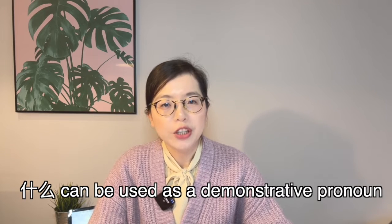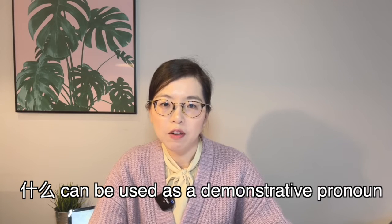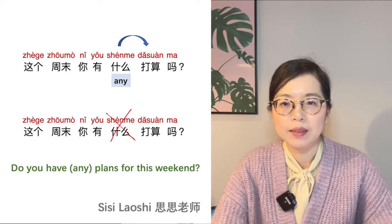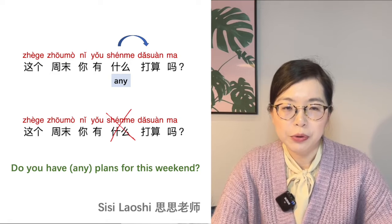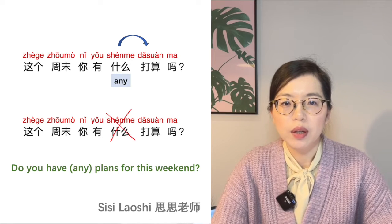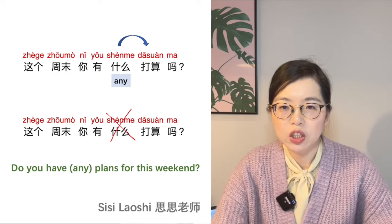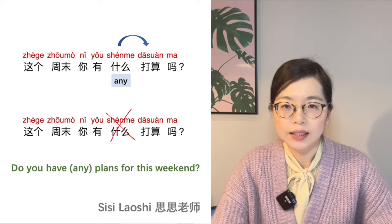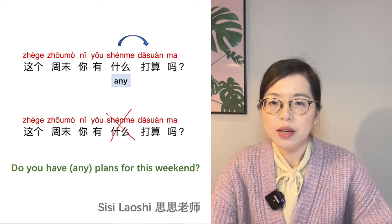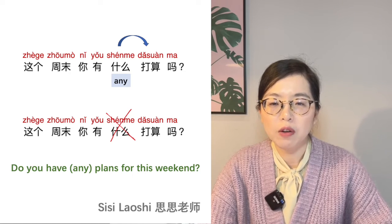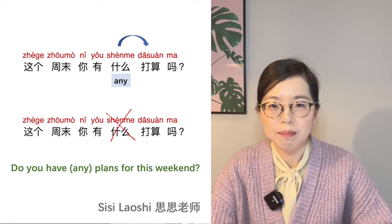In Chinese, 什么 can be used as a demonstrative pronoun instead of an indefinite person or thing, making the tone polite. 这个周末，你有什么打算吗？ In this sentence, the demonstrative pronoun 什么 refers to 打算。 We can translate it as 'any'. Please note, the meaning of the sentence won't change if we delete 什么。 Both sentences mean 'do you have plans this weekend?' With 什么 put before 打算, it softens the tone and makes the sentence more polite.